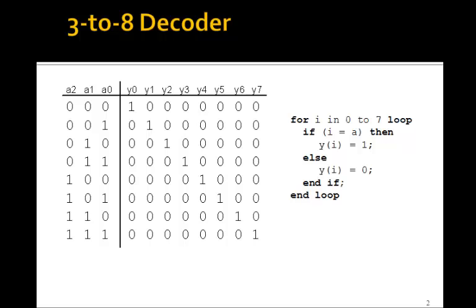Here's the truth table for our 3-to-8 decoder. Notice that for each y, y is 1 only when the input is the corresponding index. So for example, if a2, a1, a0 is 3, then y sub 3 is 1.